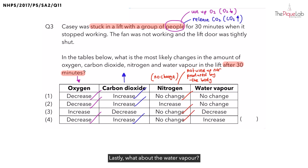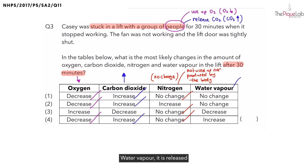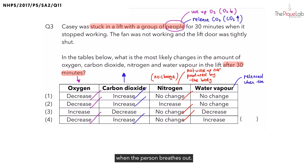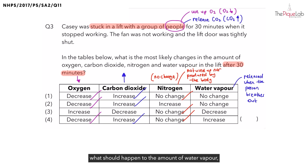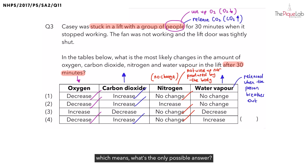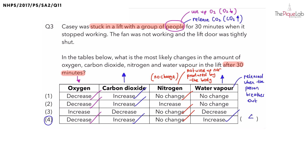Lastly, what about water vapour? Water vapour is released whenever a person breathes out. So after 30 minutes, what should happen to the amount of water vapour? We should see an increase in the amount of water vapour. Which means the only possible answer is option 4.